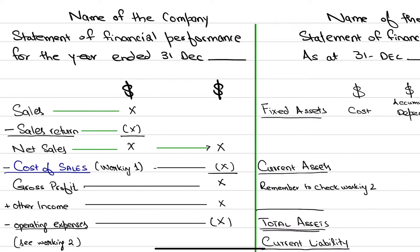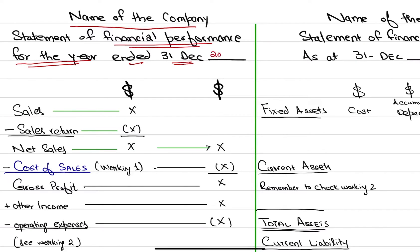The name of the company is what we are preparing this for. This is a statement of financial performance — what is the performance of our company in this year? What is the performance for the time period? That is one whole year, and when the year ends we write it as 31st December 2018. If it is a quarter, then it is a quarter ended. If it is six months, then six months. We usually make it one year.